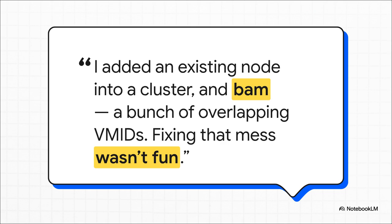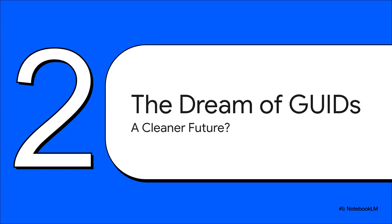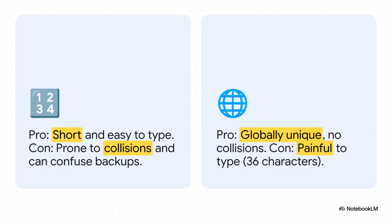All this frustration has a lot of people asking: why are we still doing this? The most common suggestion that pops up is to use GUIDs — globally unique identifiers. Is this the magic bullet? Could this give us the clean, orderly future we're all dreaming of? When you look at it this way, GUIDs seem like a no-brainer. They are, by definition, unique. No more collisions, no more backup mix-ups, much safer for all our automation scripts.